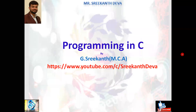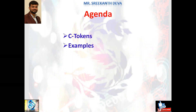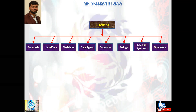Hi everyone, I am Srikanth. We are discussing programming in C language. The topic is about basics of C programming. Today's agenda is about C tokens and suitable examples. C tokens are majorly categorized by keywords, identifiers, variables, data types, constants, strings, special symbols, and operators.